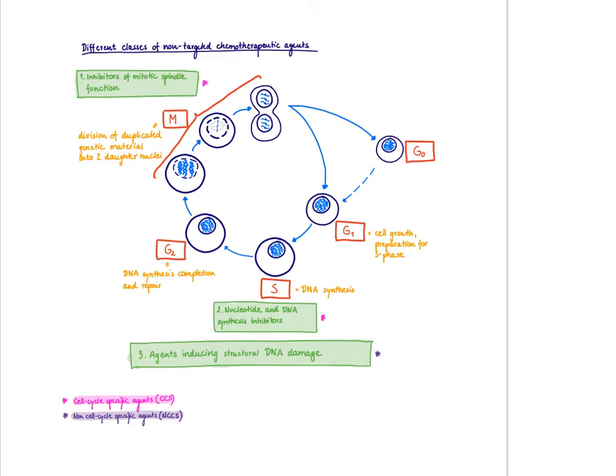We have two classes of drugs that are cell cycle-specific agents. One class is inhibitors of mitotic spindle function, and they act during M phase, specifically damaging the cell during mitosis. Another group of drugs are nucleotide and DNA synthesis inhibitors. As the name implies, they act particularly in the DNA synthesis phase.